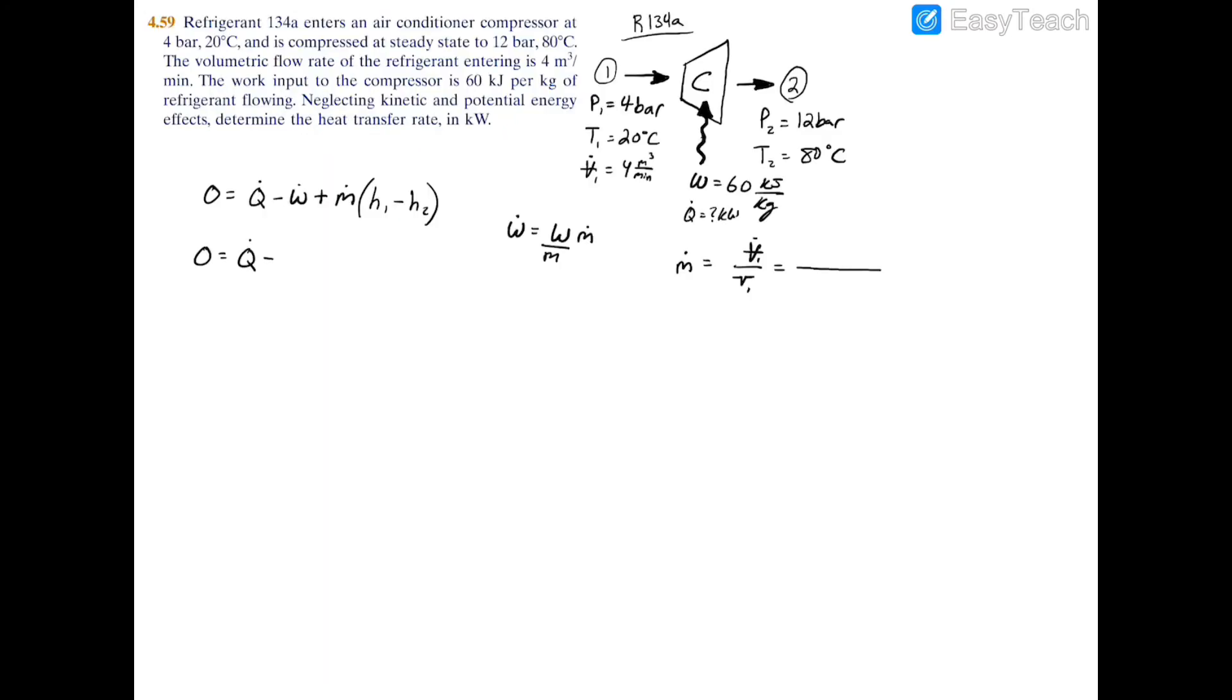So we'll have the volumetric flow rate of 4 cubic meters per minute divided by 0.05397, which we just pulled from the property table. That'd be m3 per kilogram. Now the meters cubed would cancel out and you'll be left with the unit in kilograms per minute.